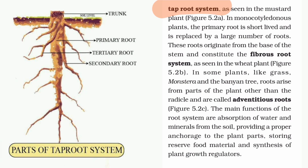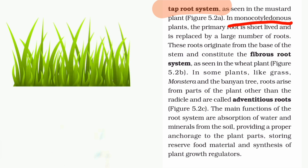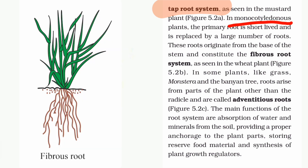Mostly 93% of dicot plants have a tap root system. In monocot plants — such as grass, coconut tree, and palm tree — the first radicle forms the primary root.